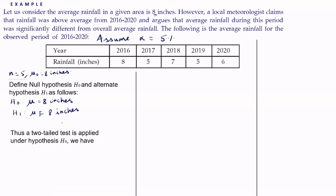Under H₀ we have t = (x̄ − μ₀) / (s / √(n−1)), or equivalently x̄ − μ₀ multiplied by √(n−1) / s. Now we do not know x̄ and we do not know s — all these we have to calculate from the given observations.